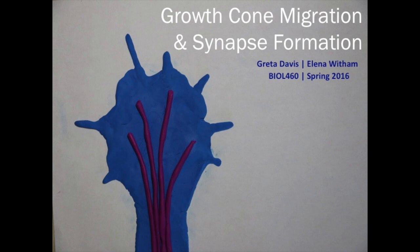The growth cone contains surface receptors that allow it to respond to specific cues in the environment by altering the cytoskeleton, changing membrane growth, and coordinating cell adhesion.